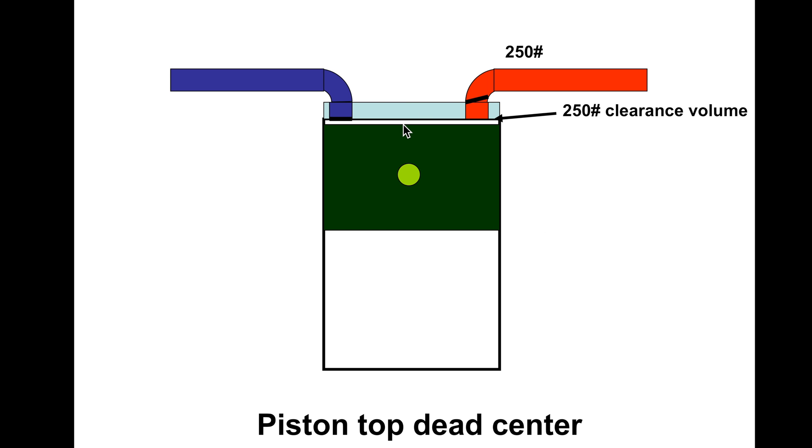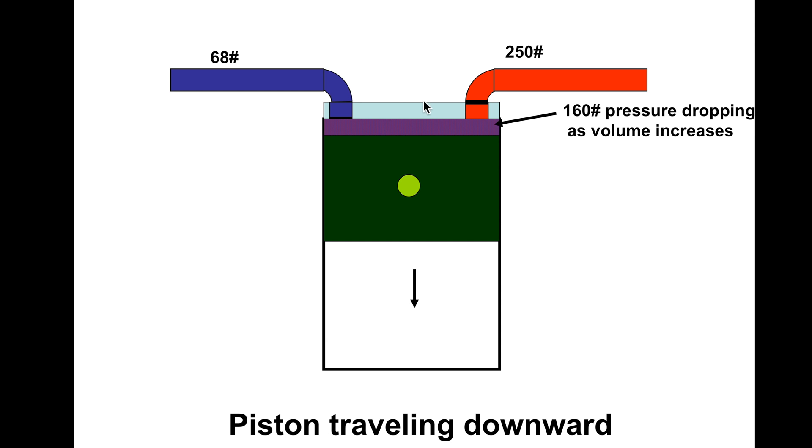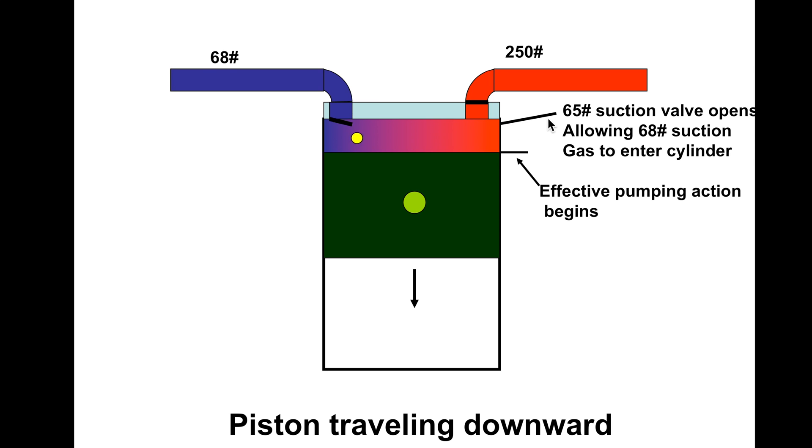Now let's look at what happened. The piston has started to go down, that means this volume is increasing. So the 250 pounds of pressure that was in the clearance volume is now dropping to 160 pounds, but it's going to have to get below 68 pounds before this valve is going to open and allow gas to come in. Once it hits 65 pounds of pressure in here, this valve is going to open because there's 68 pounds of pressure there. The effective pumping action is starting.